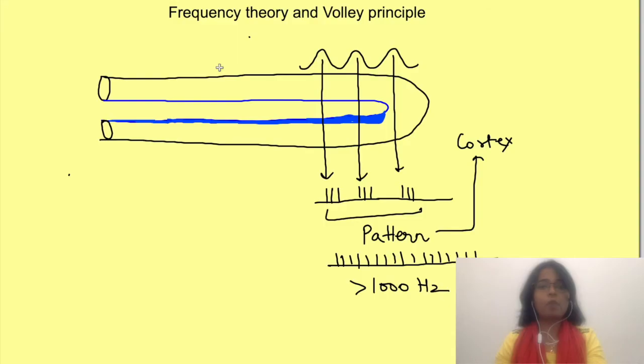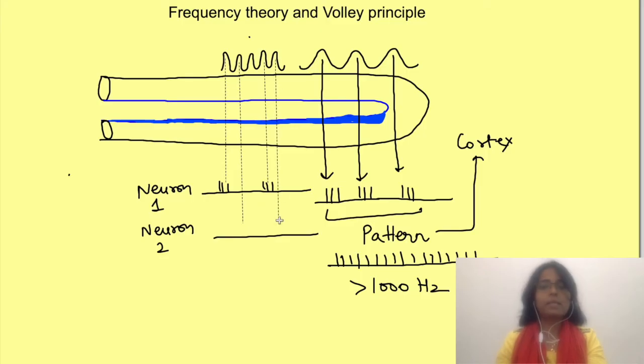That is by volley principle. In volley principle, many neurons combine and code frequency of the sound. Suppose this is the pressure wave. The first neuron will respond like this, the second neuron to the next part of the wave in that pattern, and then third neuron to the next part.